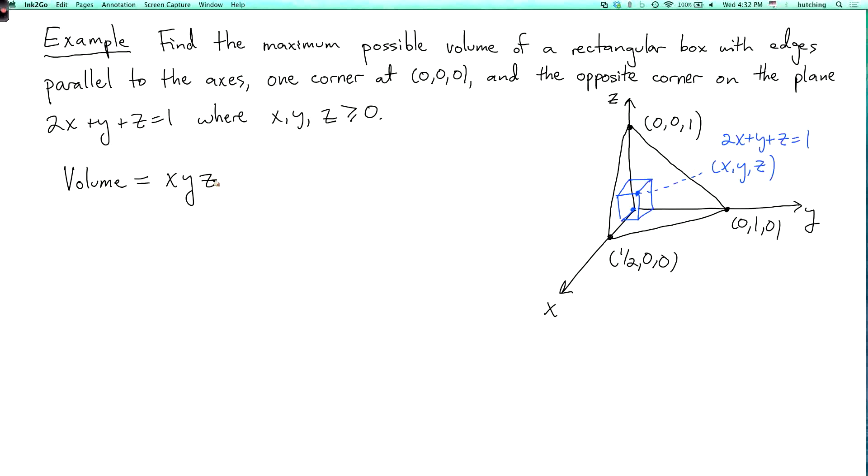Well, the volume of the box is equal to x times y times z, because x, y, and z are the side lengths of the box. Now, since 2x plus y plus z equals 1, I can substitute for z to write this as x times y times (1 minus 2x minus y).